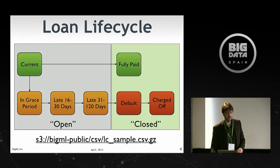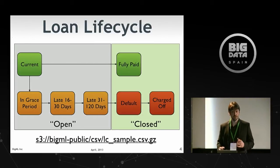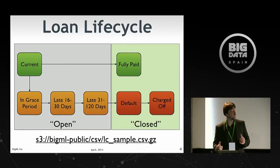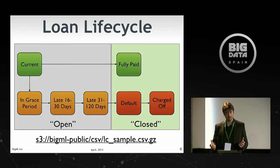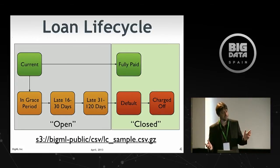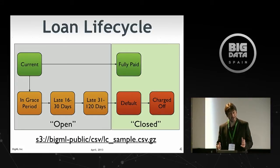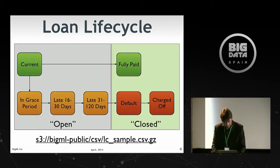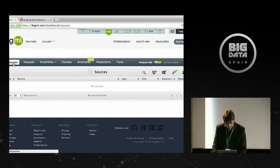That S3 link is the file I'm actually going to use for this demonstration. It's publicly available. I didn't check the Lending Club rules to make sure I could reshare a sample, so hopefully they don't send me a nasty email later. But for now, that is the actual link. If anyone's following along, you can pull that S3 link. Let's go ahead and do this.